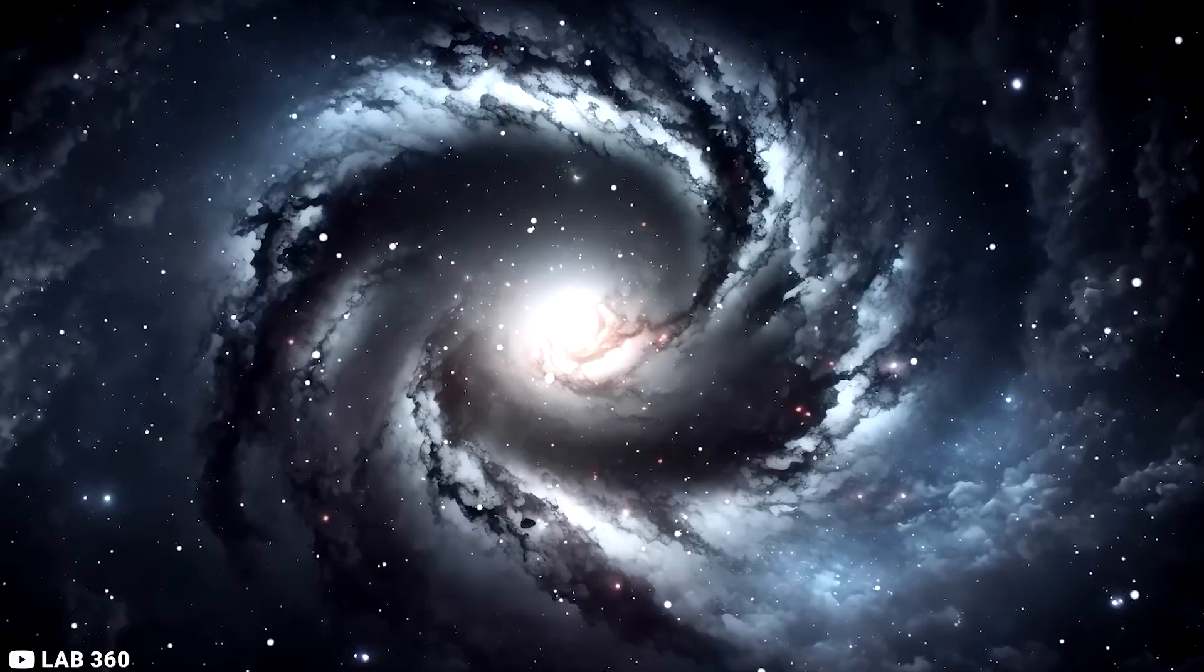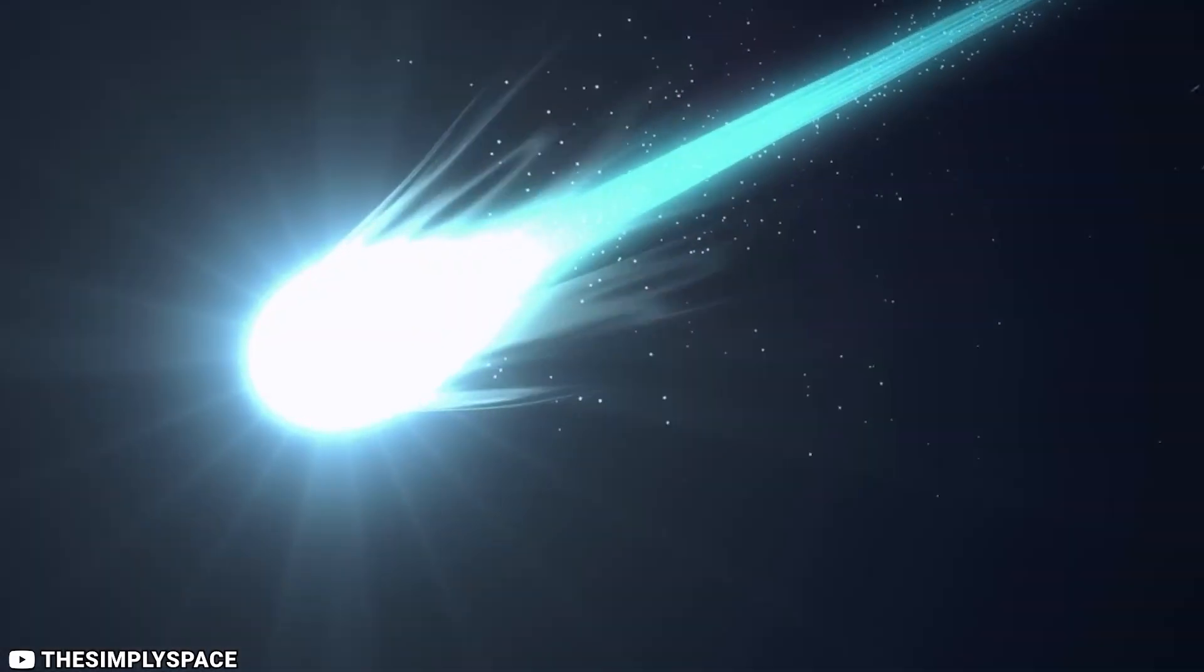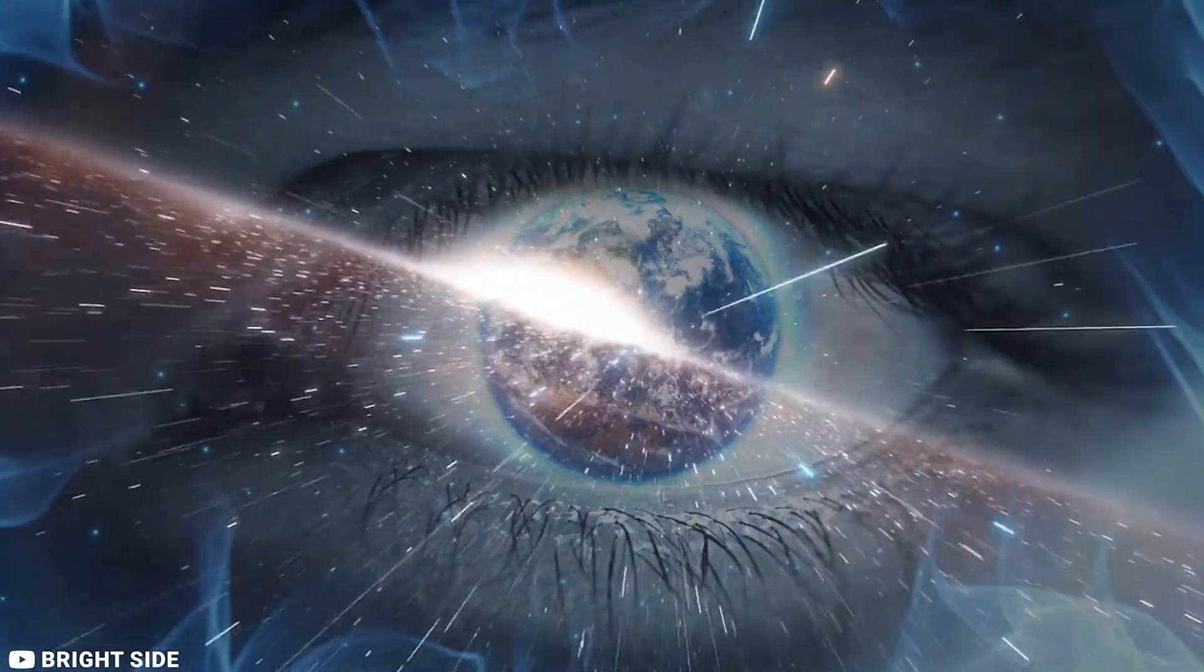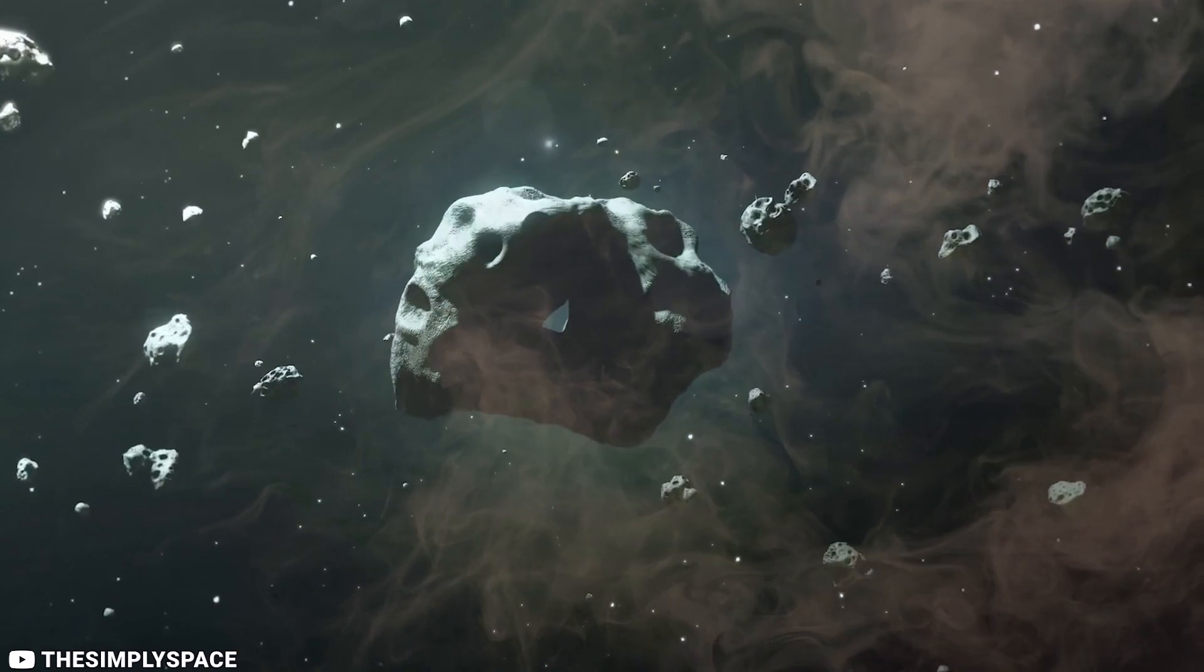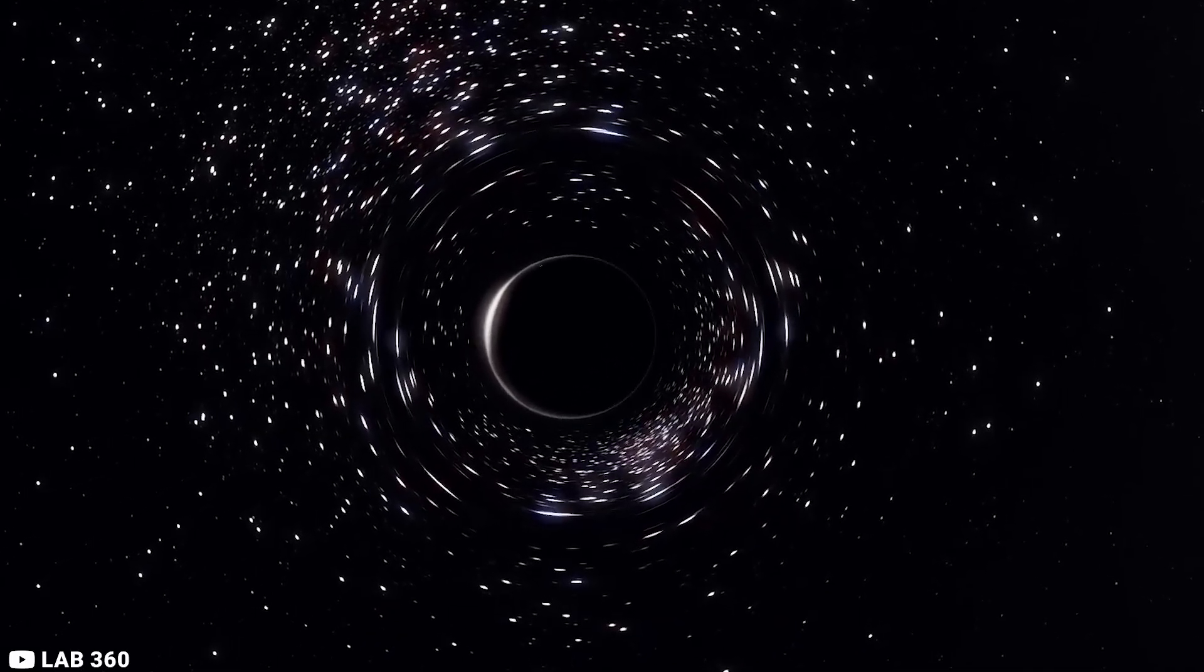There are a few reasons why space is so dark. First, there is very little matter in space. This means that there are very few particles to scatter light. Second, the only way for light to travel through space is in a straight line. This means that light from distant stars and galaxies can't reach our eyes because it's blocked by other matter, such as dust and gas.